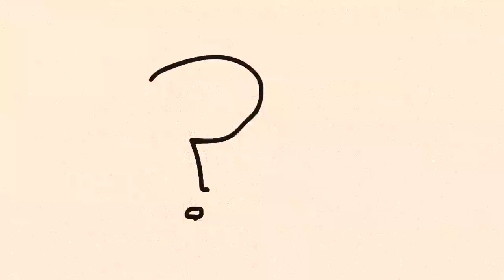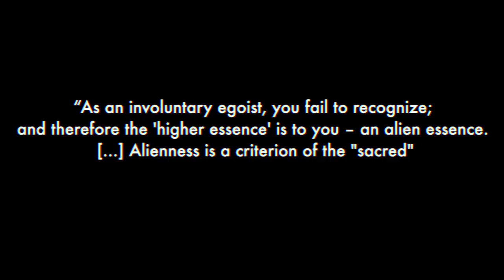Notably, Stirner rejects almost all morality, noting that values tend to emerge from a false sense of sacredness. As an involuntary egoist, you fail to recognize, and therefore the higher essence is to you, an alien essence. Alienness is a criterion of the sacred. From this, Stirner rejects basically every institution, from society to family. Yes, he states that family commitments only lead to one being tied down.